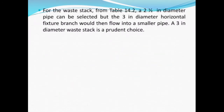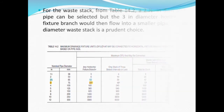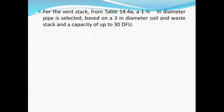For the waste duct from Table 14.2, a 2.5-inch diameter pipe could be selected; however, since the 3-inch horizontal fixture branch would then flow into a smaller pipe, the waste duct diameter must also be at minimum 3 inches. For the vent duct from Table 14.4, a 1.5-inch diameter pipe is selected, based on a 3-inch diameter soil and waste duct with a capacity of up to 30 DFU.